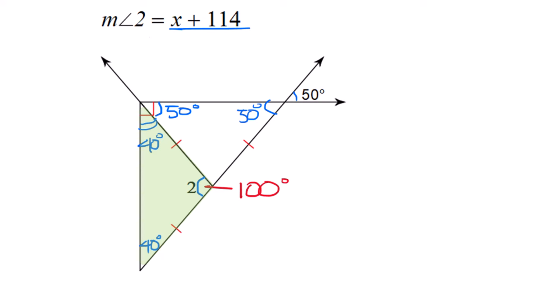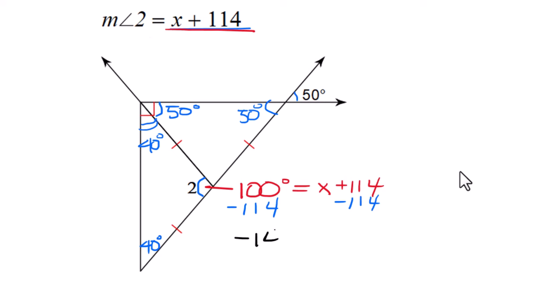Those two add up to 80, and triangles total 180, so angle 2 must be 100 degrees. The 100 equals x plus 114 because angle 2 equals x plus 114. Subtract 114, x equals negative 14.